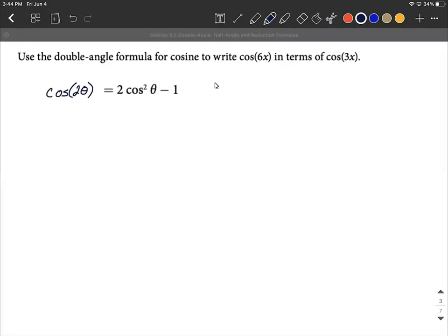Okay, we're going to use a double angle formula for cosine to rewrite cosine of 6x in terms of cosine of 3x. So initially this looks like a daunting task, but it's really not that bad.